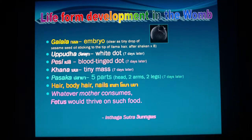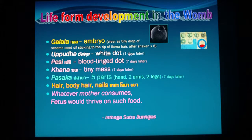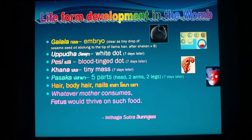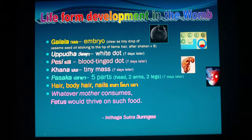The second stage is Abbuda, a white dot, certain days later — like what is called a blastocyst today. Then there is Ghana, a tiny mass, seven days later. Then Pesī, which has five parts: one head, two arms, two legs.